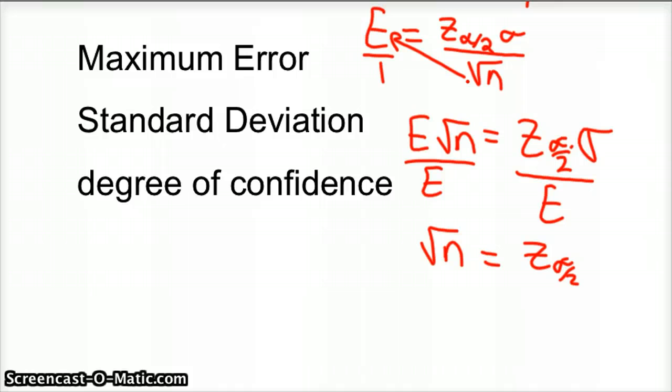Alpha divided by 2, and then sigma over E. And then your last step is to eliminate the square root, and to eliminate that you just square both sides of the equation.